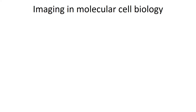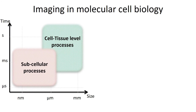Cell biologists work in two major spatio-temporal regimes, namely the cell and tissue regime and the subcellular regime. Cellular processes occur at spatial scales of micrometers to millimeters and temporal scales of milliseconds to seconds or even hours. Subcellular processes, on the other hand, occur at spatial scales of nanometers to micrometers and temporal scales of microseconds to milliseconds.